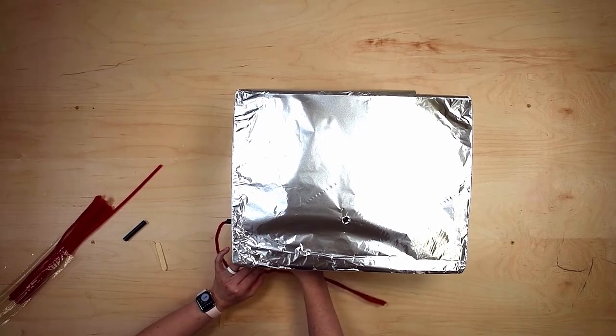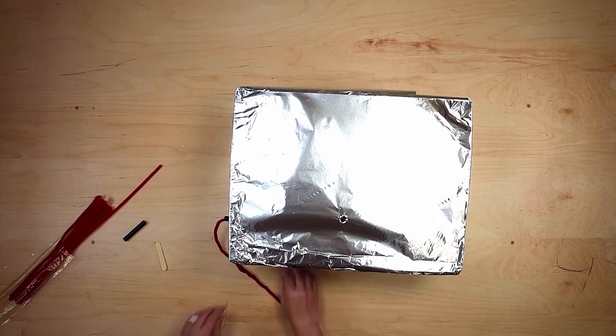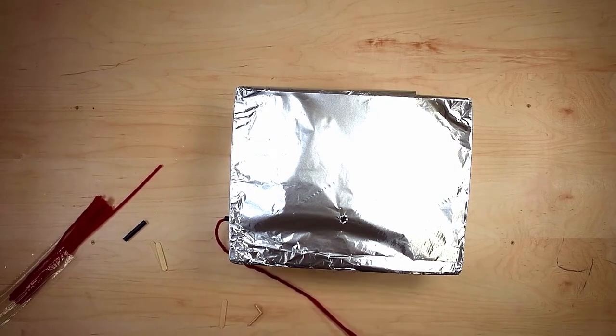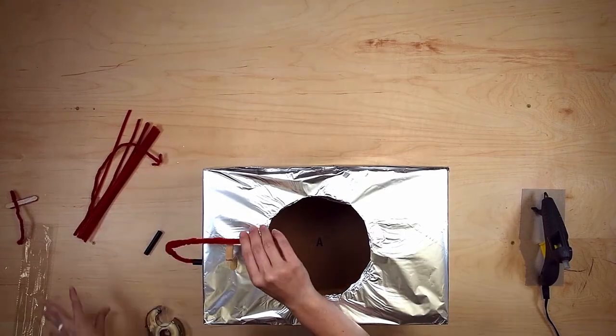Now I'm going to use popsicle sticks to make a little stand, which is going to help support my microphone. Since my microphone is so long, it's a little bit heavy. So I bent and glued the popsicle stick on the outside of the box near my circular face hole.